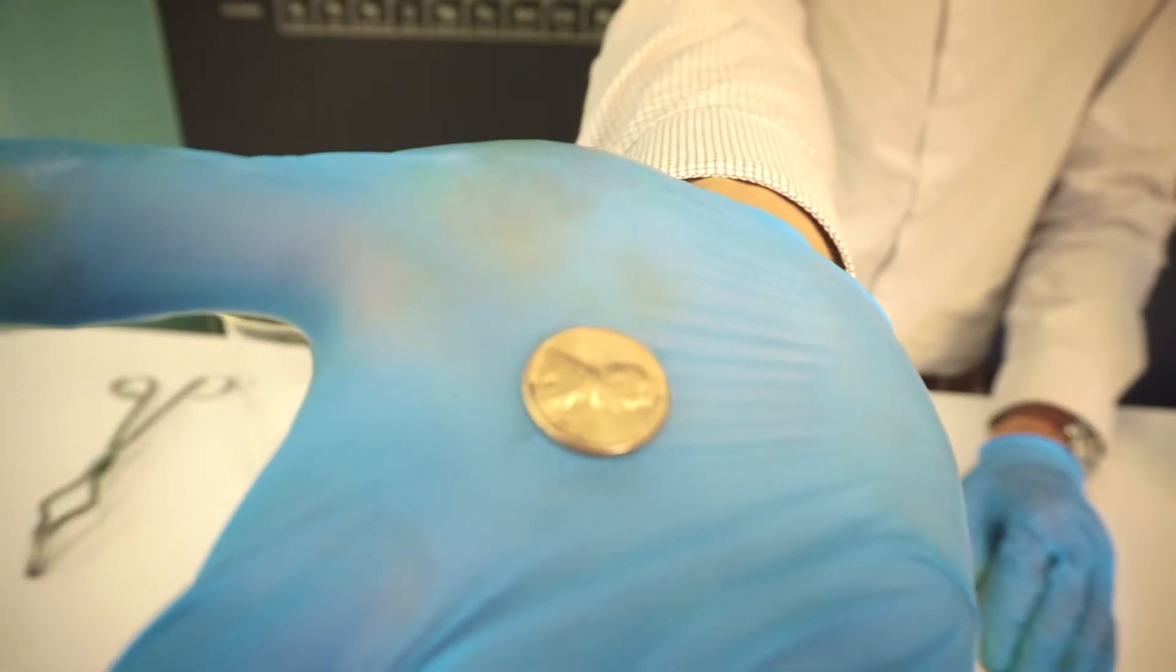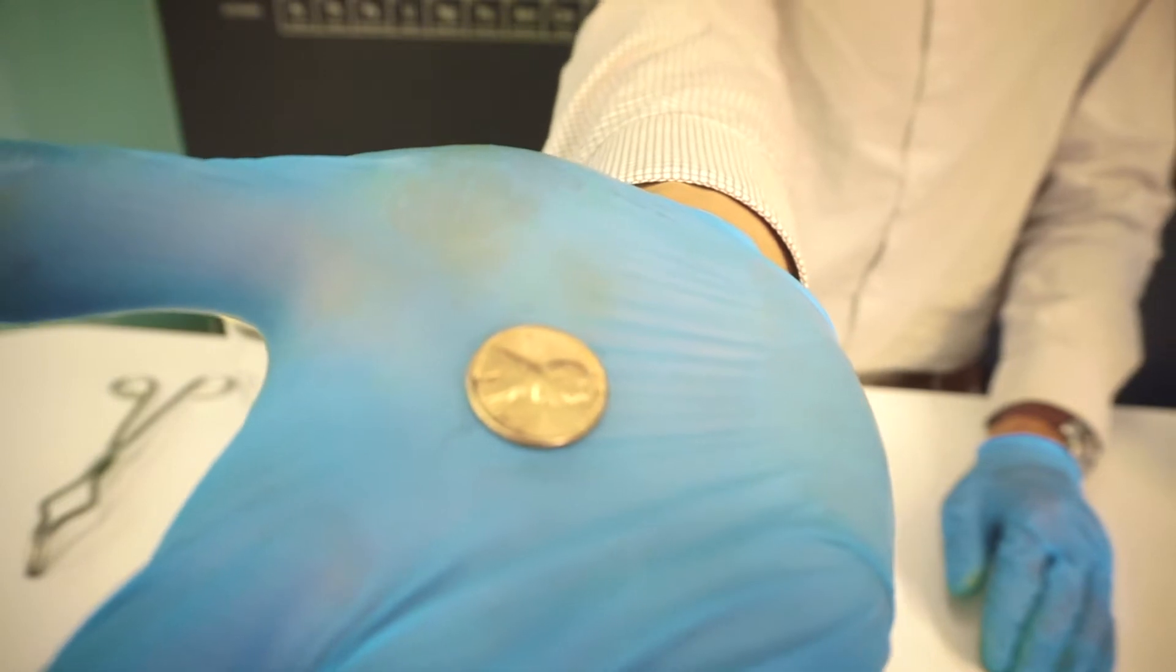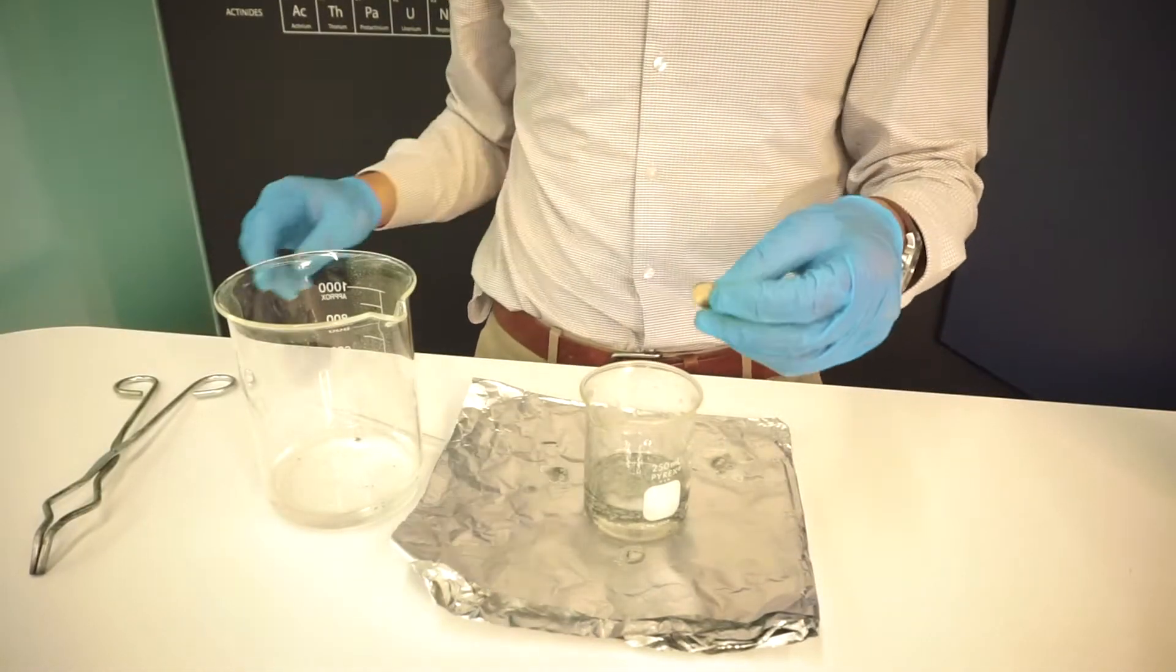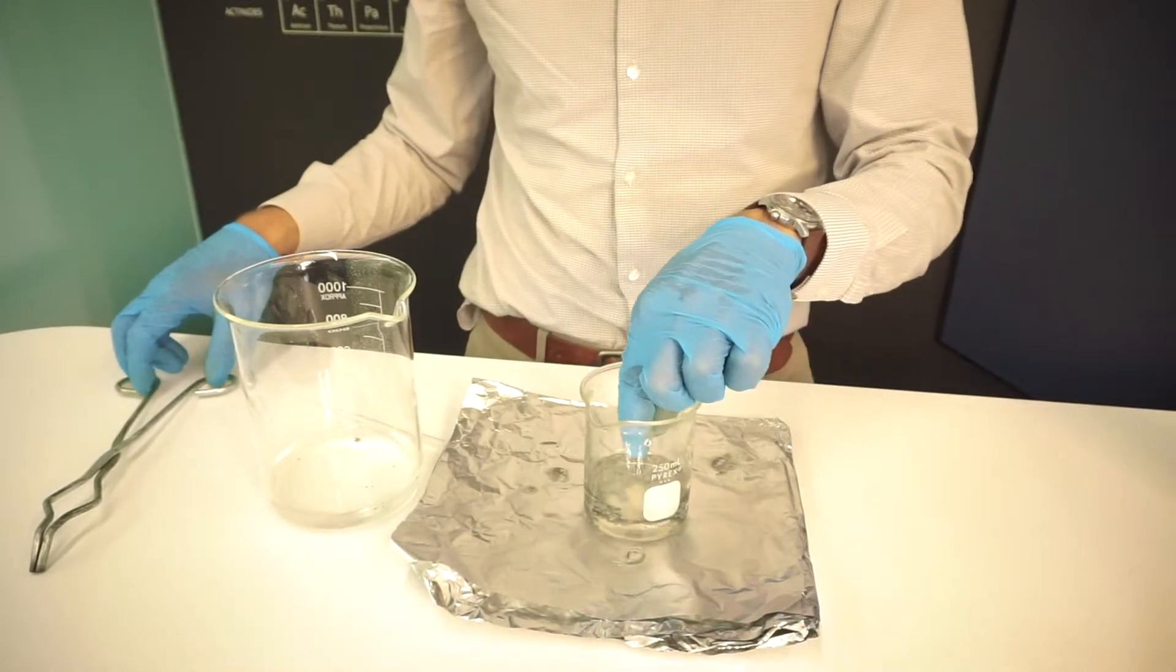All right, so we just have a normal US penny here made out of copper on the exterior, and we're going to see what happens when we put it in a solution of sodium zincate.